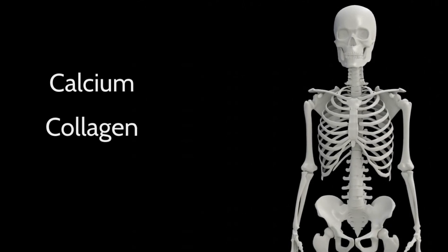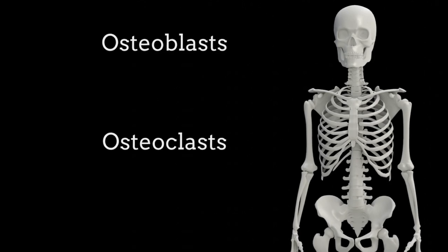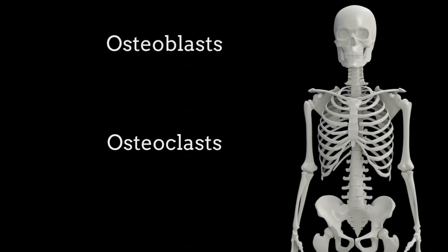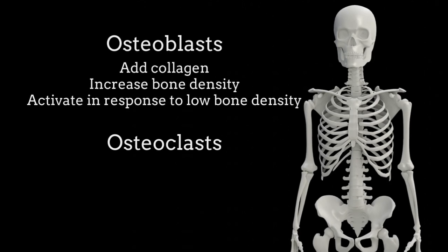Bones are made up of calcium and a protein called collagen, and in order to maintain optimal density, our bodies have two different cells called osteoblasts and osteoclasts.